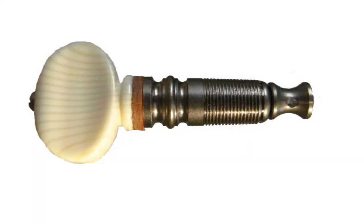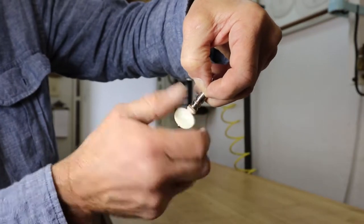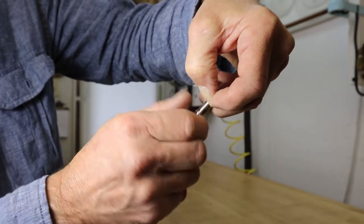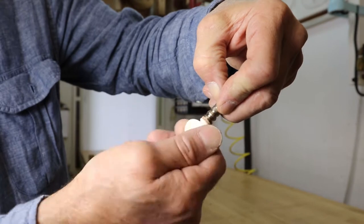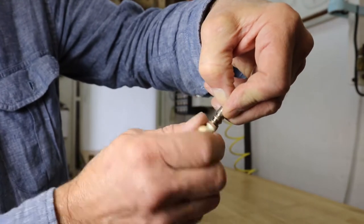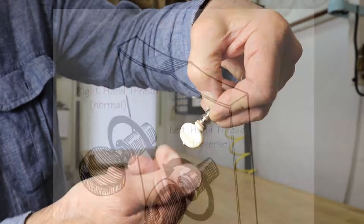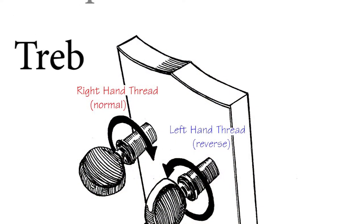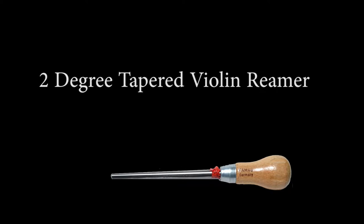A set of four peghead tuners will have two normally threaded tuners and two reverse or left-hand threaded tuners. To tell which peg is which, put your fingernail on a thread, rotate it clockwise, and if the peg moves out from your fingernail, it's a left-hand thread. If the peg drives down into your fingernail, it's right-hand or normally threaded. The right-hand threaded tuners install into the treble side of the instrument, and the left or reverse threaded pegs will install into the bass side. You'll need a two-degree tapered violin reamer for this next step.